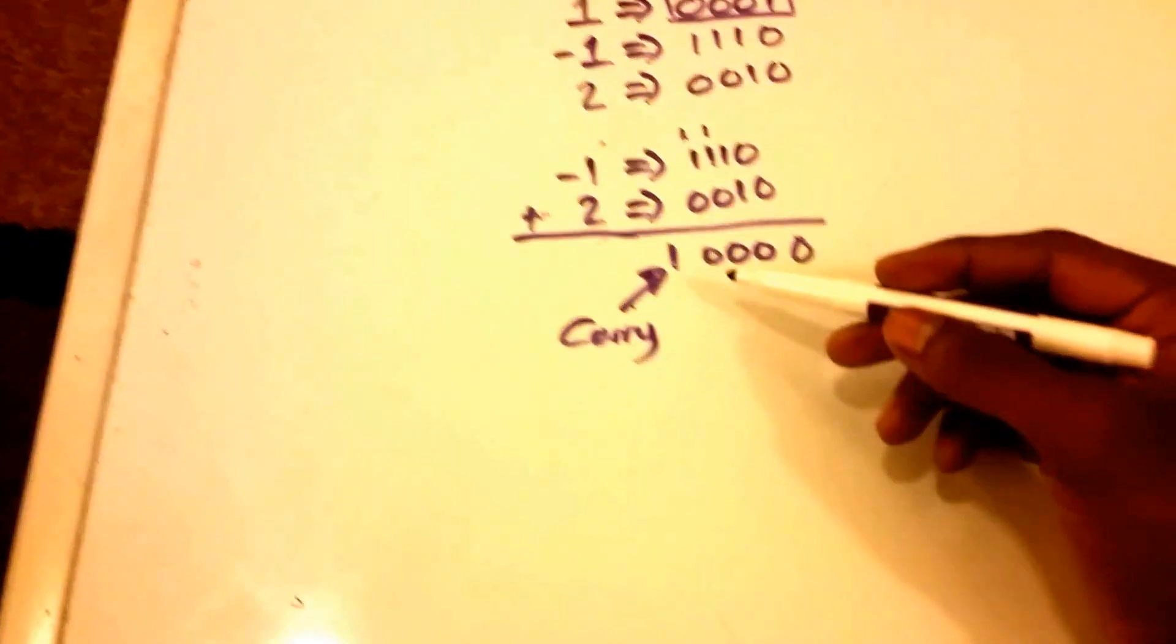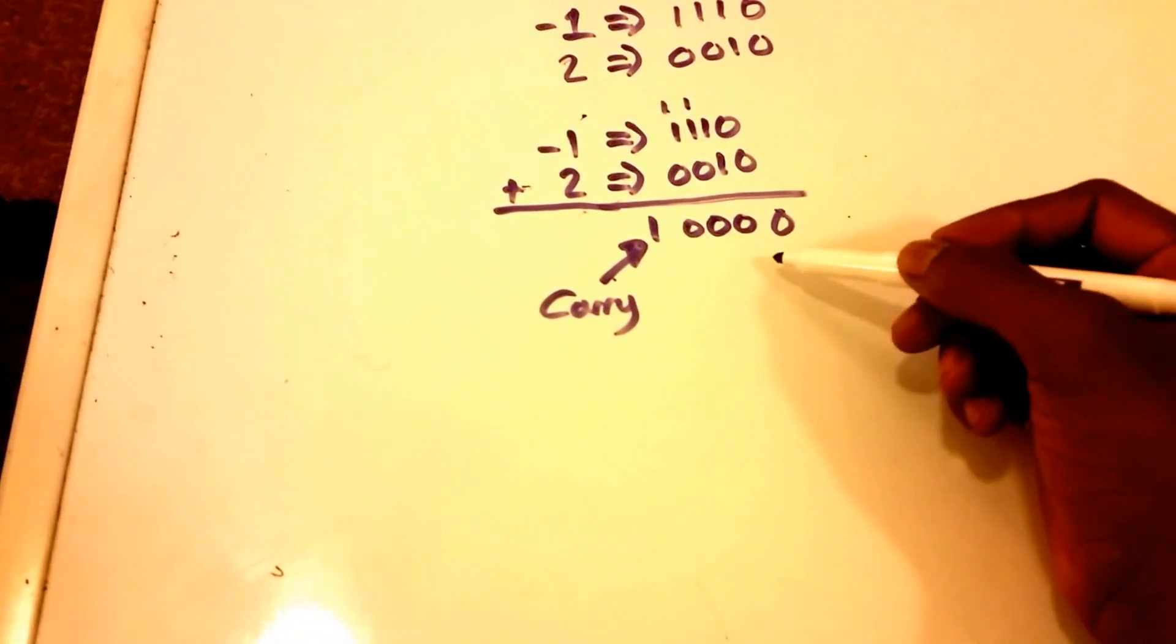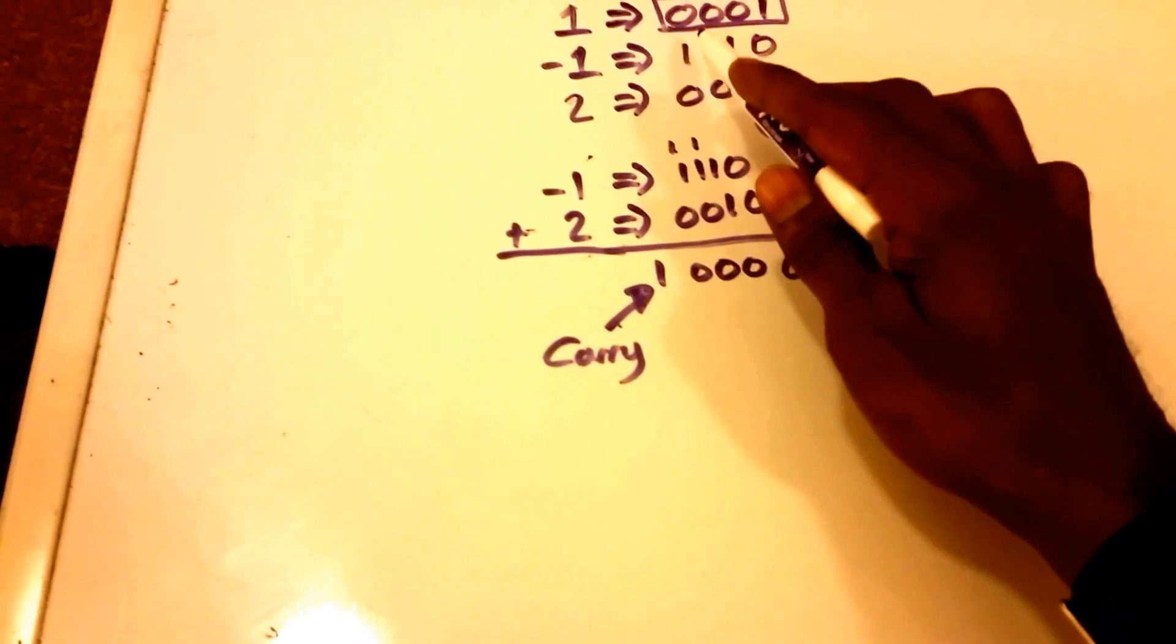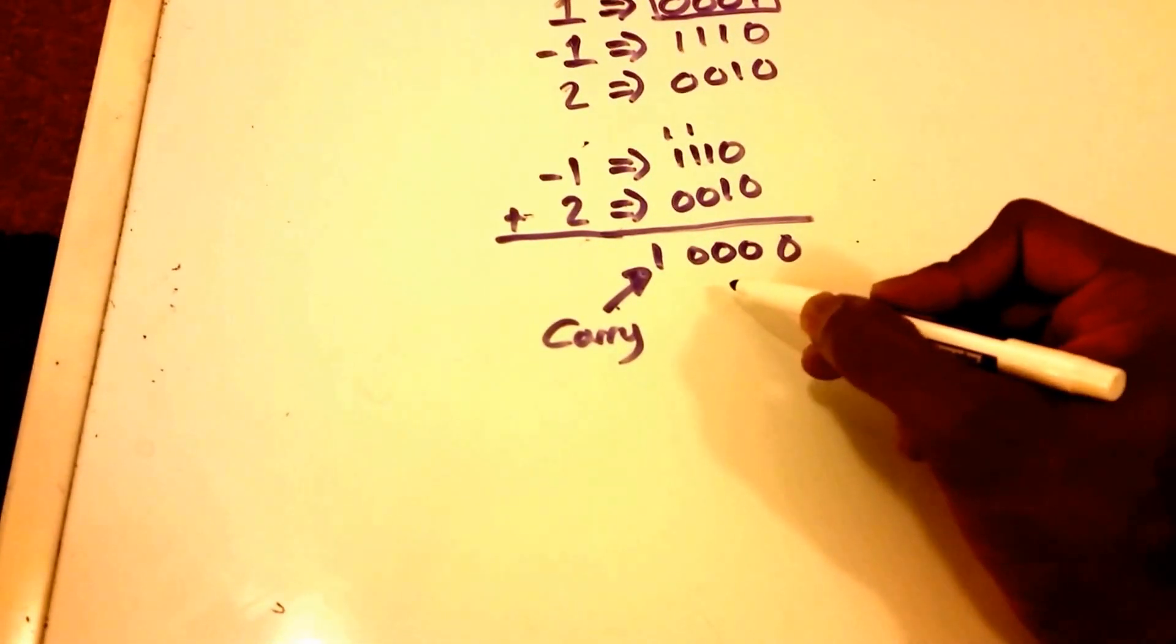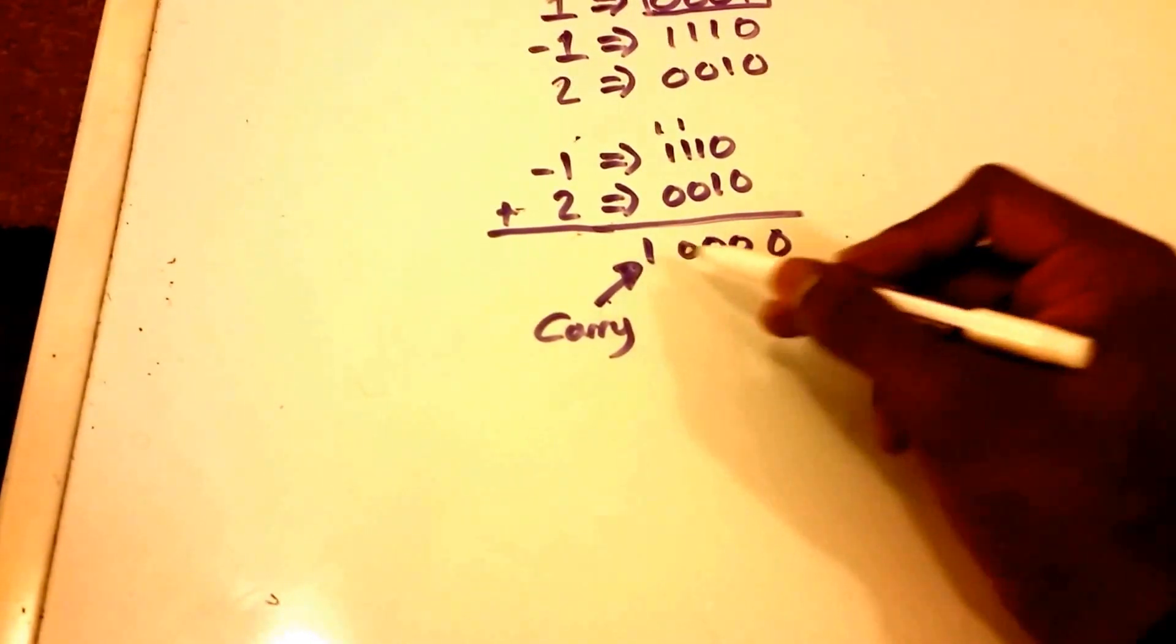And what you can see is that this binary digit does not equal what we expected which was 0001. This is actually two to the power of, let's see, zero one two three four, two to the power four.